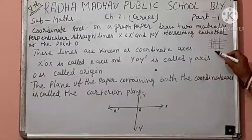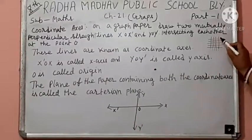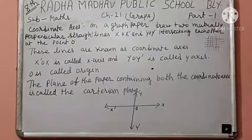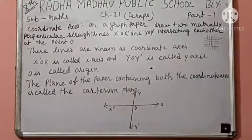Today, this type of graph paper is available. This is an example of graph paper. These lines are known as coordinate axes.